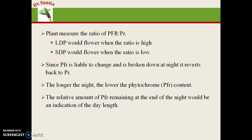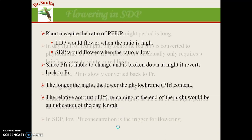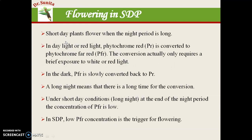The longer the night, the lower the phytochrome PFR content. The relative amount of PFR remaining at the end of the night is an indication of day length. If PFR concentration is lower after a long night, then the day length is short. PFR and PR interconversion is responsible for regulating flowering. In short day plants, lower PFR concentration is the trigger for flowering; it will be opposite in long day plants.